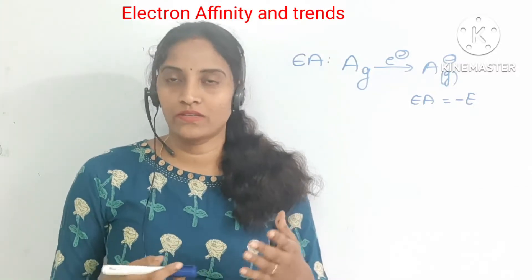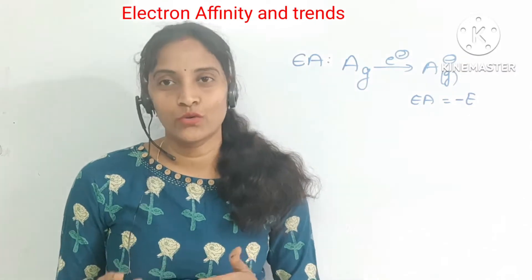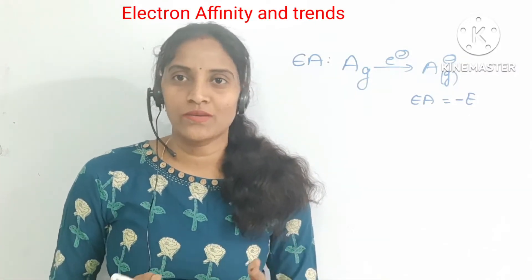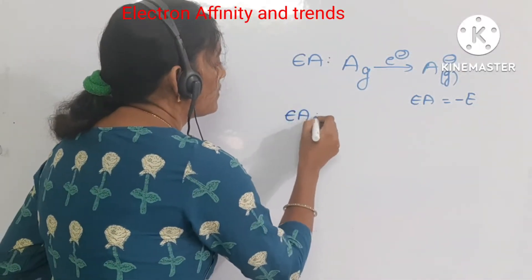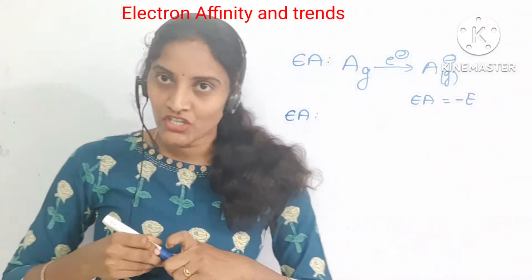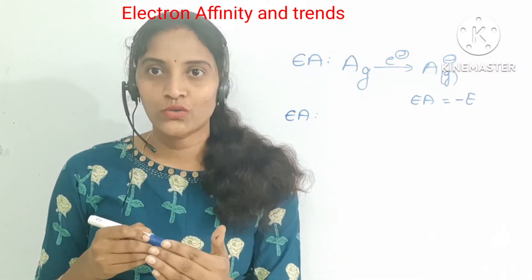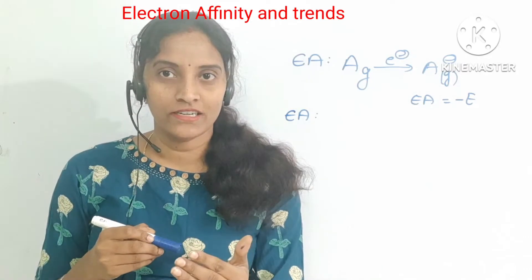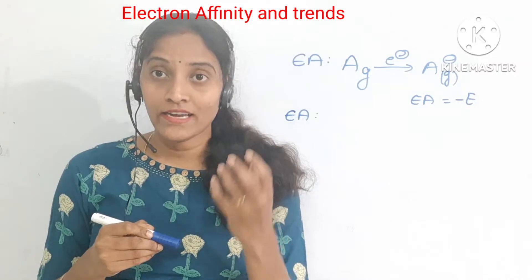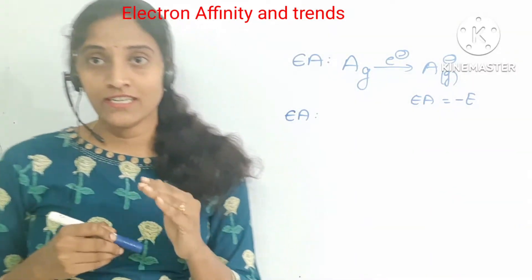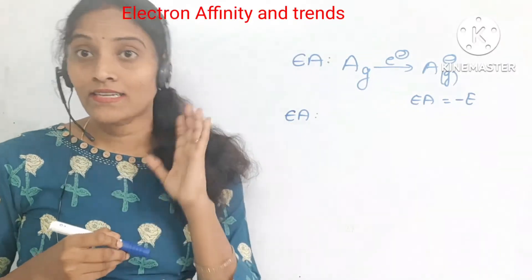Electron affinity has types — first electron affinity, second electron affinity, third, fourth, and so on. We are going to discuss the first and second ones. First electron affinity is the enthalpy change when we are going to add one mole of electrons to one mole of gaseous atoms, and it will form one mole of singly negatively charged gaseous ion. That is electron affinity one, at standard conditions.